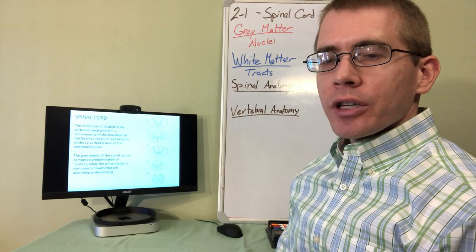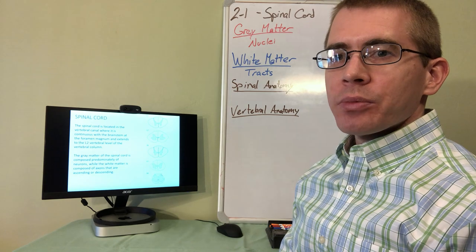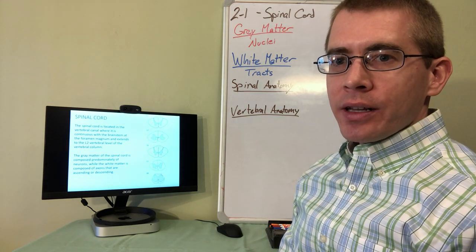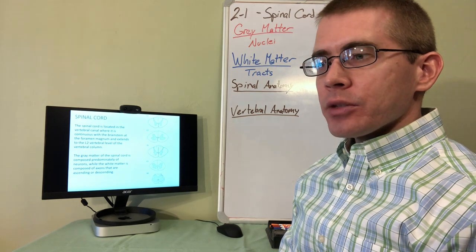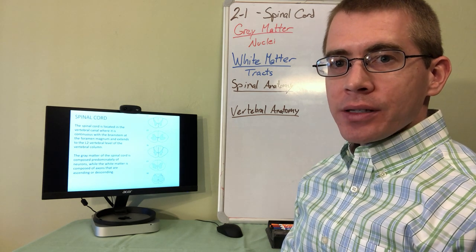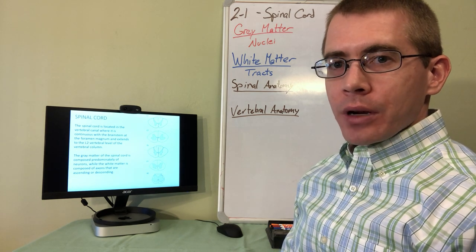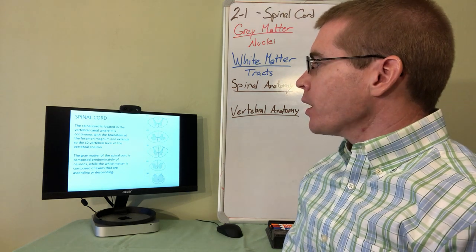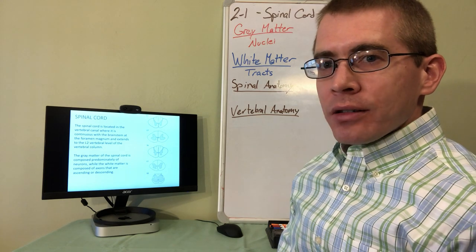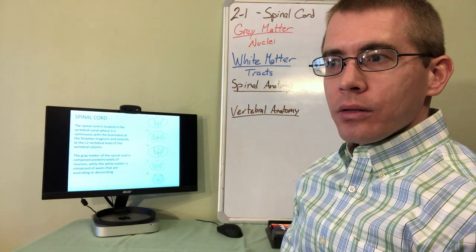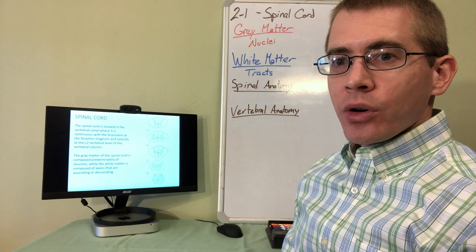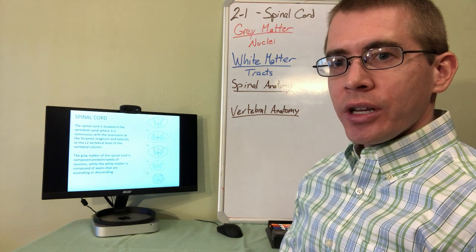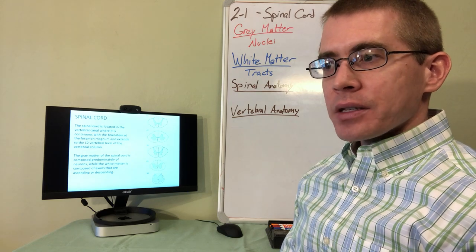Welcome back everybody to the second portion of lecture 2-1. This portion is specifically about the spinal cord. The spinal cord is located in the vertebral canal, continuous with the brainstem, traveling through the foramen magnum to enter the cranial cavity. The spinal cord will have a different morphology — it will look different and have different anatomical features based on what location in the vertebral column it's in.